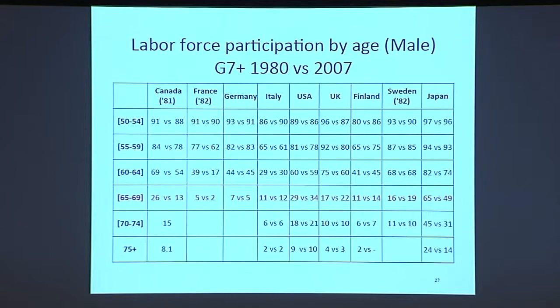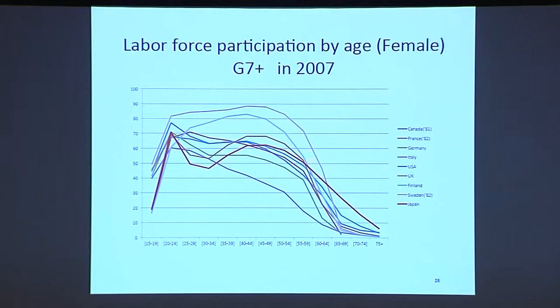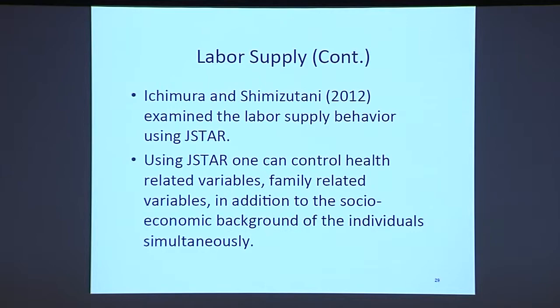Although Japanese labor force participation at ages 65 to 69 is much lower compared to 27 years ago, it's still much higher than other countries. Women's labor force participation up to the 50s is not very high, but above 65 it is very high. With Shimizu-Tani, we examined labor supply behavior using JSTAR data. A big advantage of JSTAR is that it contains health-related, family-related, and socioeconomic background variables, so we can assess these three aspects' contributions to retirement.